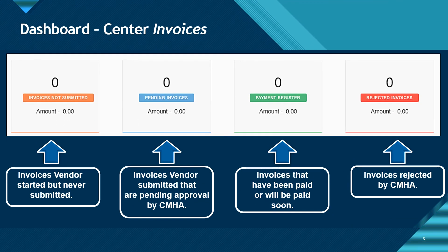Shown here is the overview of invoices, which you can access by clicking the invoices button on the dashboard center menu. Invoices not submitted are those invoices that the vendor has started and saved, but not yet submitted to CMHA. Pending invoices are those that the vendor has submitted but CMHA has not yet approved. The payment register contains invoices that have been paid or will soon be paid. Rejected invoices are those rejected by CMHA. We will further discuss invoices in the invoices section of the CMHA Vendor Cafe Training for Vendors.